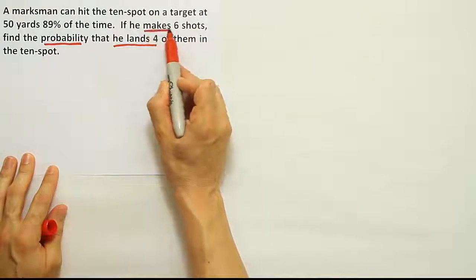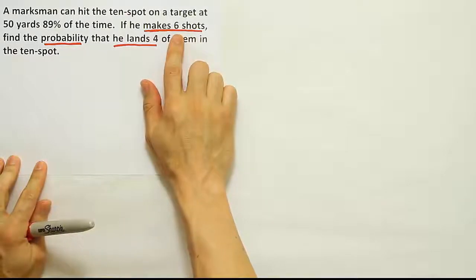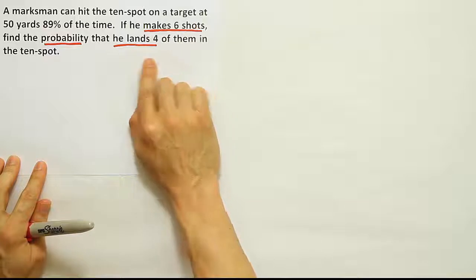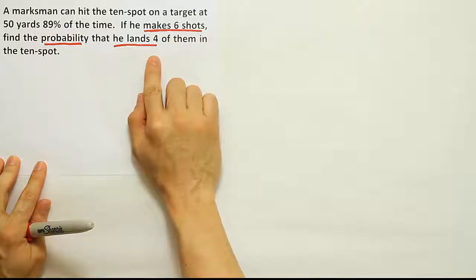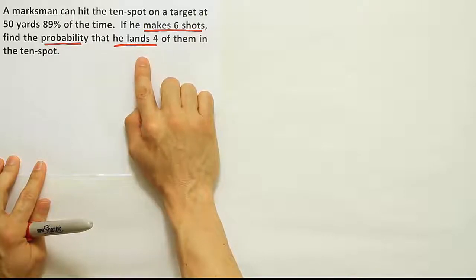But he's making six shots. So what we have here is a subset of the total number of attempts here. A subset of those is going to turn out where he makes the target, makes the shot, and then two of them are going to turn out to be misses. So four he makes, two he misses.